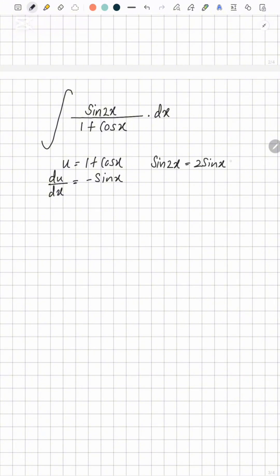to 2 sin x cos x. So our integral is going to be 2 sin x cos x over u, and instead of dx I can write du over negative sin x.